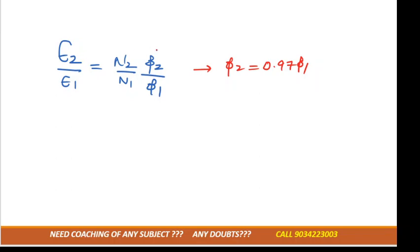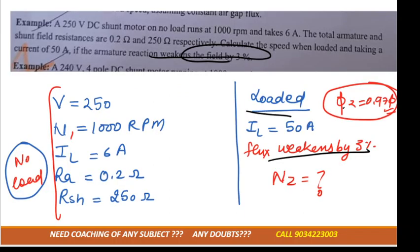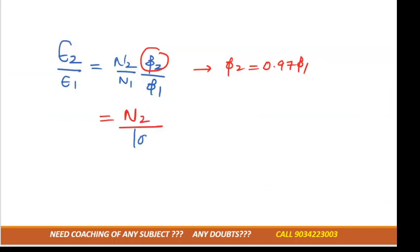So we need to just change this one only - phi 2 is equal to 0.97 phi 1, and N2 we need to calculate. N1 is already given, that is 1000 rpm. Phi 2 is 0.97 phi 1 divided by phi 1, so phi 1 would cancel out.